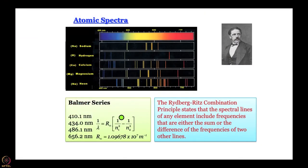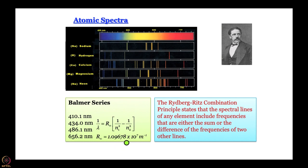Even before a theoretical formulation to explain this was worked out, experimentally looking at the energies where the emissions take place for different atoms, an empirical formula was already there. This empirical formula was called the Rydberg formula, based on the Rydberg-Ritz combination principle, which states that the spectral lines of any element include frequencies that are either the sum or difference of frequencies of two other lines. What it boils down to is: 1/λ (wave number) equals a constant multiplied by (1/n₁² − 1/n₂²), where n₁ and n₂ are two positive integers. This constant R is called the Rydberg constant, and its value was found to be 1.09678 × 10⁷ per meter.